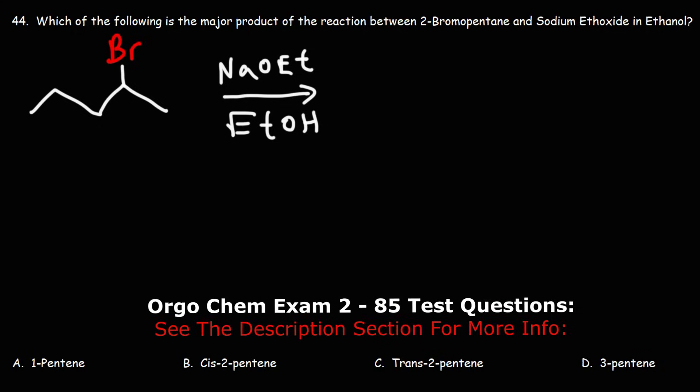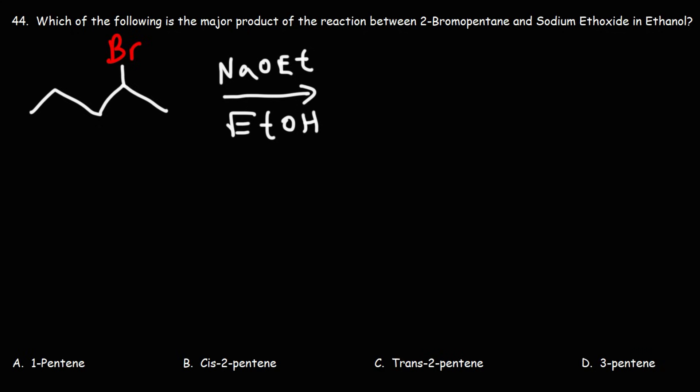Now looking at our products, we see that we're converting an alkyl halide into an alkene. So this is going to be an elimination reaction and we have a secondary alkyl halide.